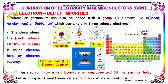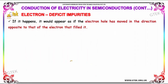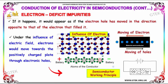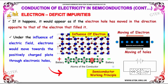Silicon or germanium can also be doped with group 13 elements like boron, aluminium, or gallium, which contain only three valence electrons. The place where the fourth valence electron is missing is called an electron hole or electron vacancy. An electron from a neighboring atom can come and fill the electron hole, but in doing so it leaves an electron hole at its original position. It would appear as if the electron hole has moved in the direction opposite to that of the electron that filled it.